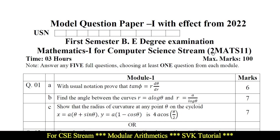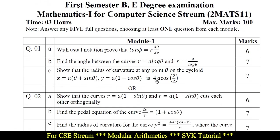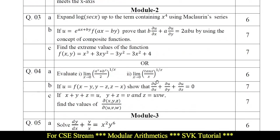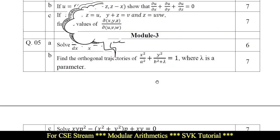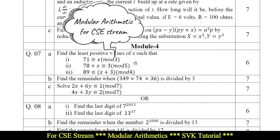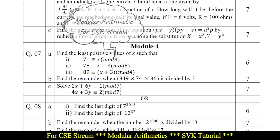The subject code is BMATS101. As I have discussed in the previous video, the solution for Module 1 — now in this video, I am going to discuss Module 4, called Modular Arithmetic. Moving on to the solution part.